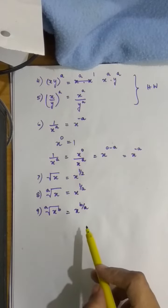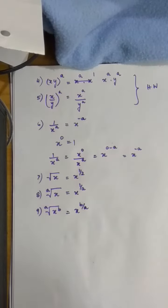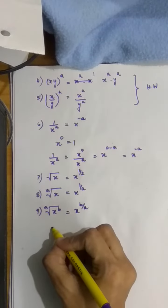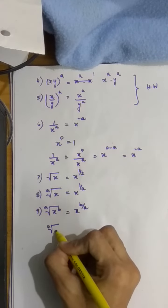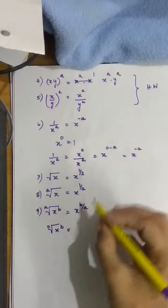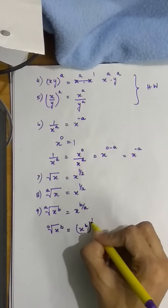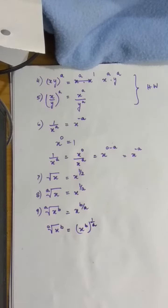To prove this, I will use my eighth rule. The ath root of x to the power b can be written as x to the power b being raised to the power 1 by a.